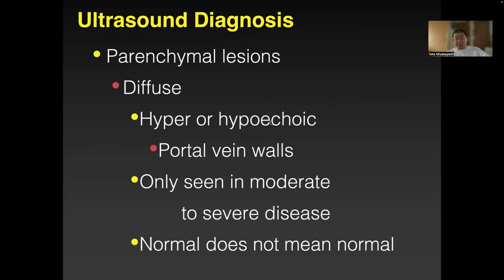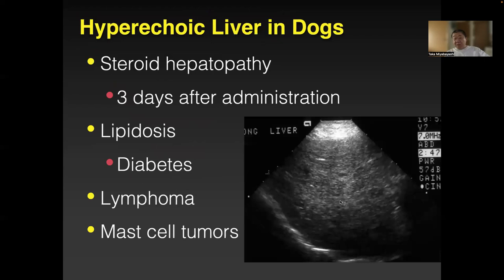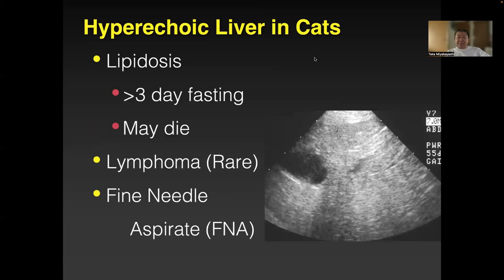Parenchymal lesion: if I see a diffuse hyperechoic pattern — very bright, not seeing portal markings — my differentials are steroid hepatopathy, lipidosis, lymphoma, and mast cell tumor. What do I do? Stick the needle in for FNA. If you see mast cells, make sure you give drugs afterwards, otherwise the dog might go into anaphylactic shock as the granules are destroyed.